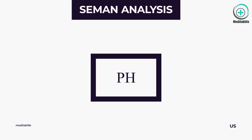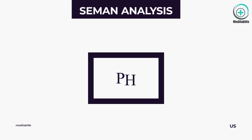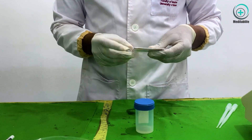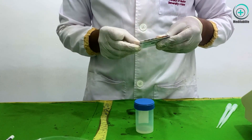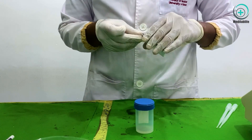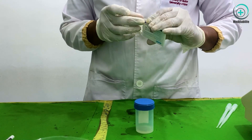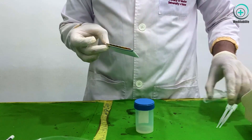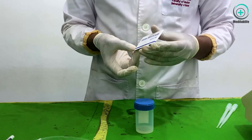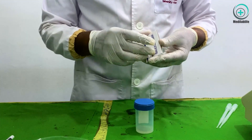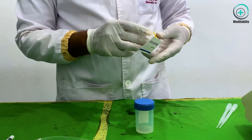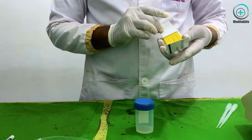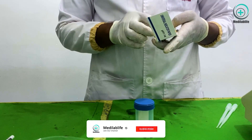pH. Take a strip of either broad-range or narrow-range pH paper and touch one surface onto the semen sample. Observe the pH paper for color change. A more accurate laboratory pH meter can also be used to determine the pH.